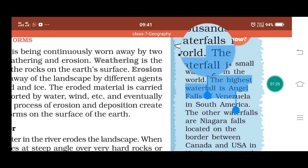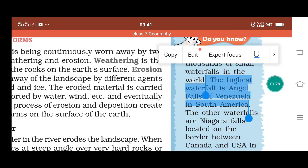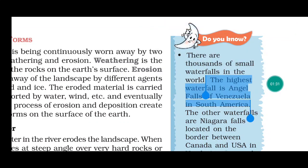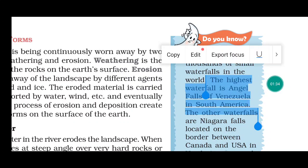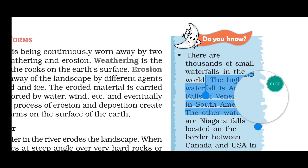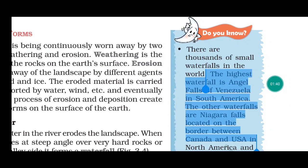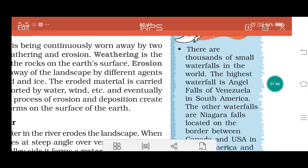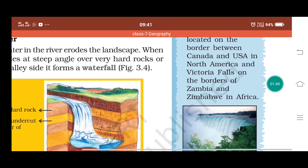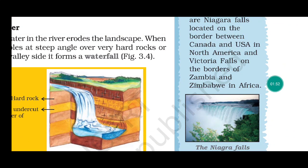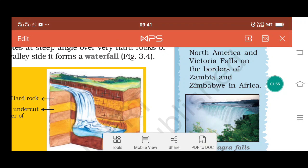There are some important waterfalls. The highest waterfall is Angel Falls in Venezuela, South America. Another is Niagara Falls, located on the border between Canada and USA in North America. And Victoria Falls is on the border of Zambia and Zimbabwe in Africa. These are three important and very famous waterfalls in our world — you have to remember these.